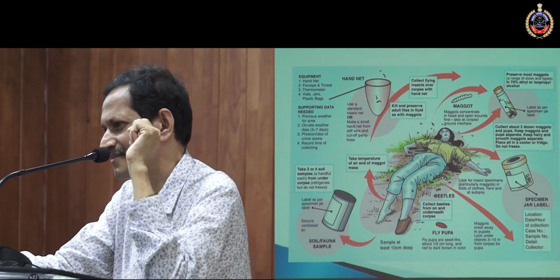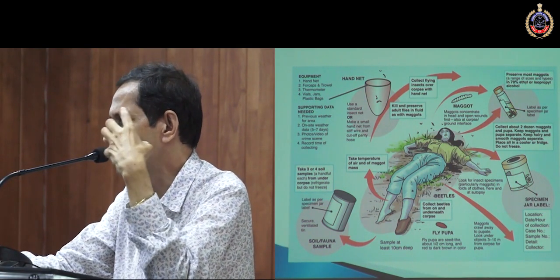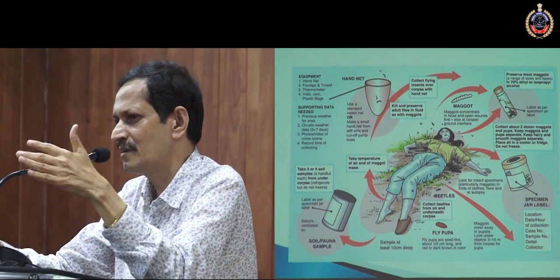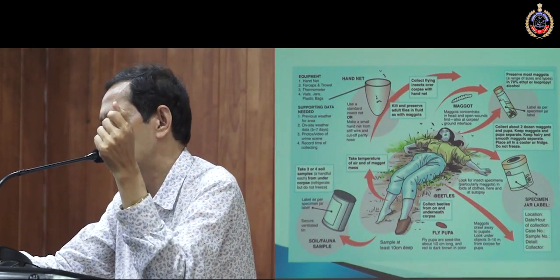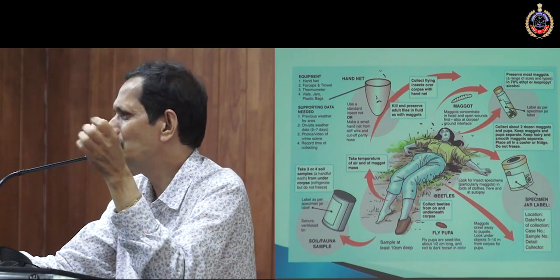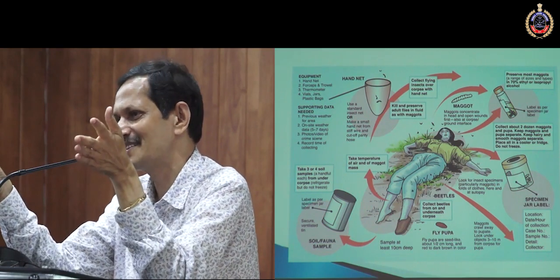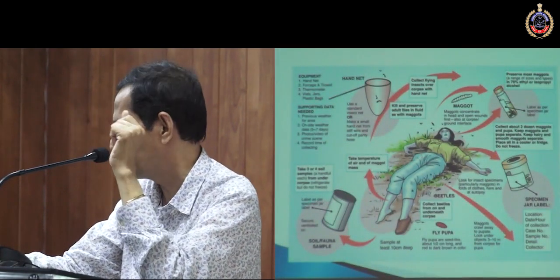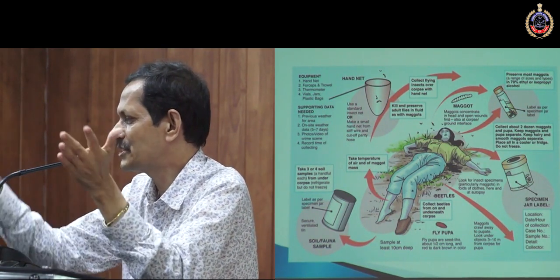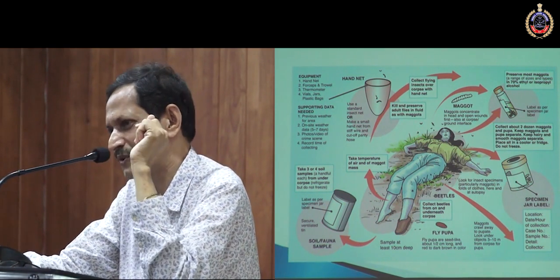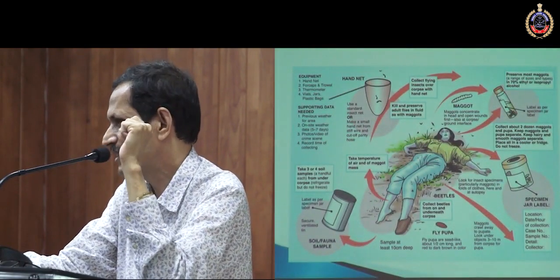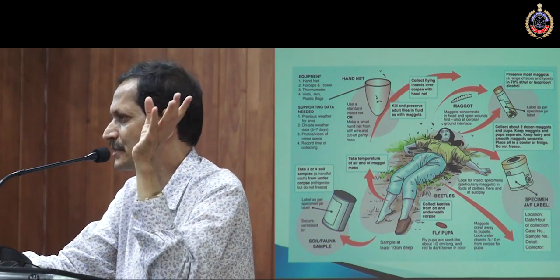If you don't know the temperature of that area, your assumptions will be incorrect. For example, at 30 degrees Celsius, the first instar larva may become second instar in two days. But if the temperature is very low, it may take three days; if higher, only 1.5 days. So there will be errors. These climatic data are very important.